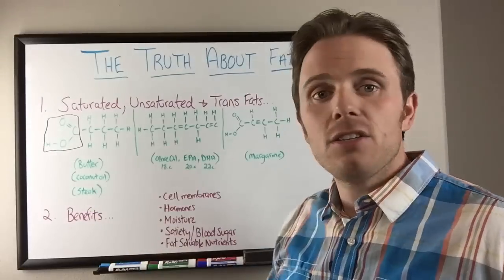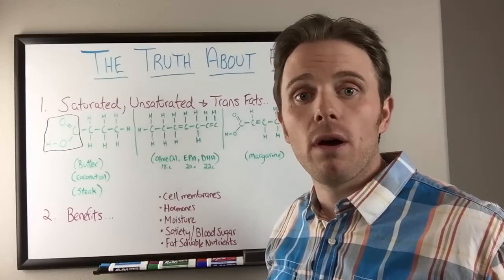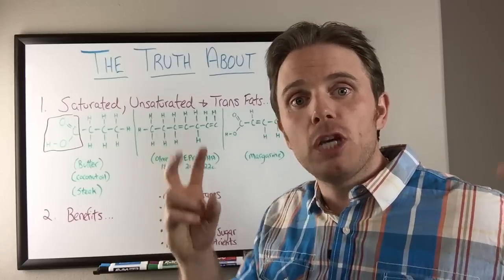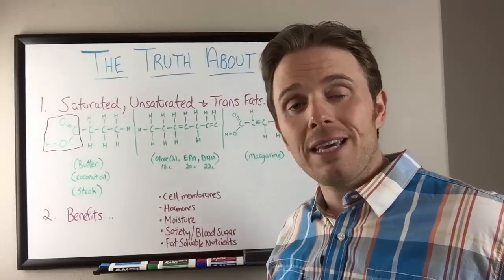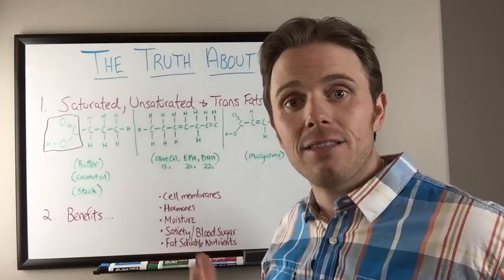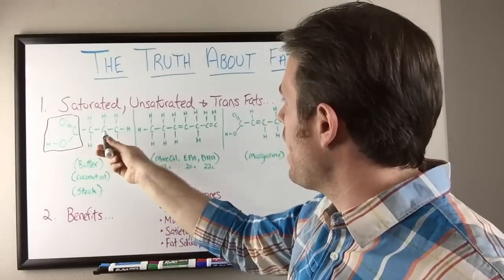If we have, let's say, six, eight, ten, or twelve carbons, that's going to be coconut oil. Or we call them medium chain triglycerides. We have caproic, caprylic, capric, and lauric acid. These are six, eight, ten, and twelve carbons. So depending on how many carbons we add to that molecule, that depends on what the fat is.